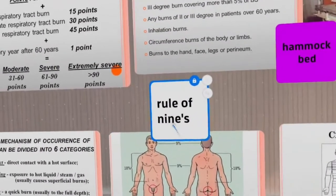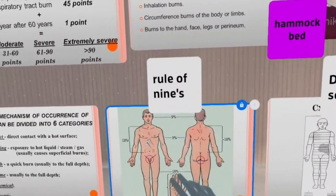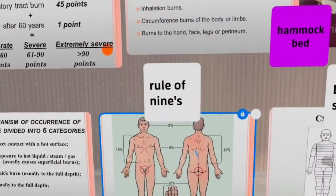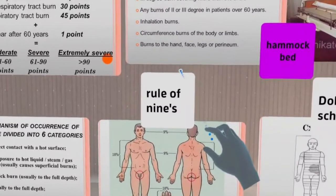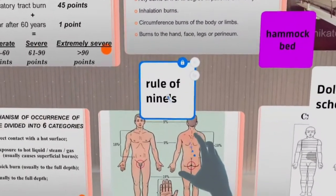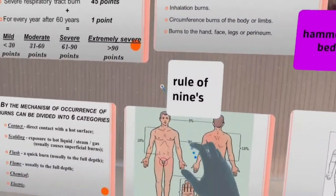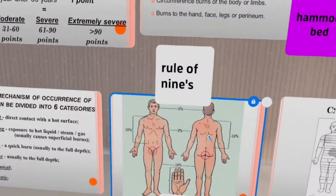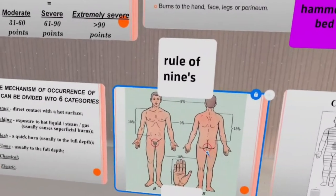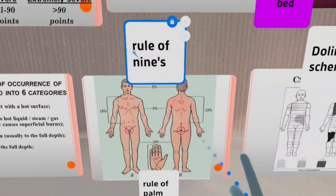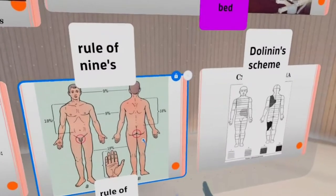Another rule is the rule of nines. The body surface is divided into regions each equal to nine percent. Head and neck equals nine percent. One arm equals nine percent. The front surface of the trunk is 18 percent. The back surface of the trunk is 18 percent. One leg is 18 percent, and the other leg is 18 percent. The perineal area is one percent. Counting all nines gives 99 percent, with the final one percent for the perineal zone.